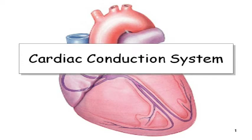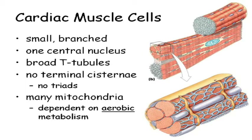We're comparing skeletal muscle, cardiac muscle, and smooth muscle. Cardiac muscle cells are shorter — they're not long cylinders — and they're branched. One of the big things is that there are no terminal cisternae. So cardiac muscle cells are very much affected by and dependent on extracellular calcium levels.